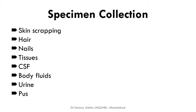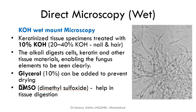Specimen collection depends on the site of lesion. Specimens include skin scrapings, hair, nails, tissues, CSF if there is meningitis, body fluids, urine, and pus. Whatever pathogenic lesion is present, we collect the specimen based on that.